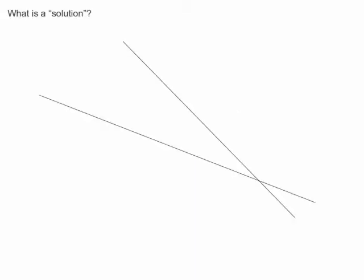When you solve a system of linear equations, what you're really trying to do is find the point these lines have in common. That common point is called the solution. It's the only point that's in both lines.